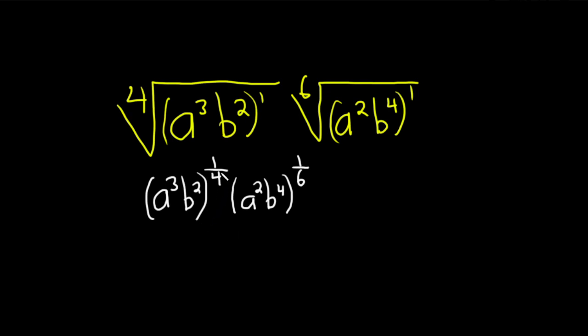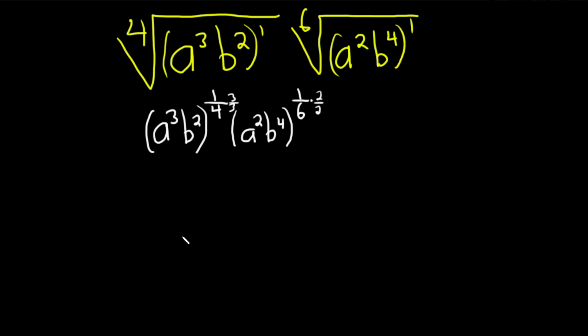And now basically we want to write these as numbers over 12. So basically we can multiply this one by 3 over 3 and this one by 2 over 2. It's multiplying by 1 in clever ways. We can get a 12 in the denominator here. So this is going to be parentheses a cubed b squared 3 over 12 and then a squared b to the fourth 2 over 12.